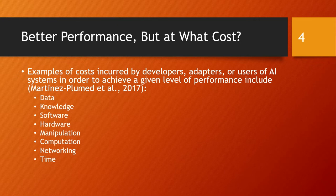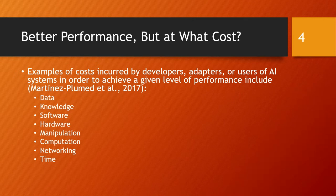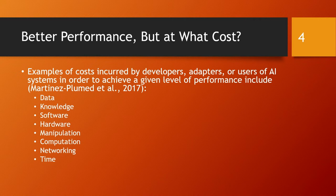There's been a lot of improvements in AI, but often at greater cost than previous systems. Some of the examples of costs broadly defined include data, knowledge of people who are injecting that expertise into the system, software, libraries, hardware, manipulation, so human oversight, computation.